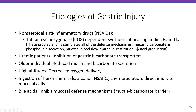Let's go over etiologies of gastric injury. NSAIDs cause both direct injury to the epithelium and decreased defense mechanisms — they inhibit cyclooxygenase-dependent synthesis of prostaglandins E2 and I2. Since prostaglandins stimulate all defense mechanisms — mucus production, bicarbonate, phospholipid secretion, blood flow, and epithelial restitution — and also decrease acid production, their inhibition is damaging. Uremic patients have inhibition of gastric bicarbonate transporters, and older individuals have reduced mucin and bicarbonate secretion, making them more prone to injury.